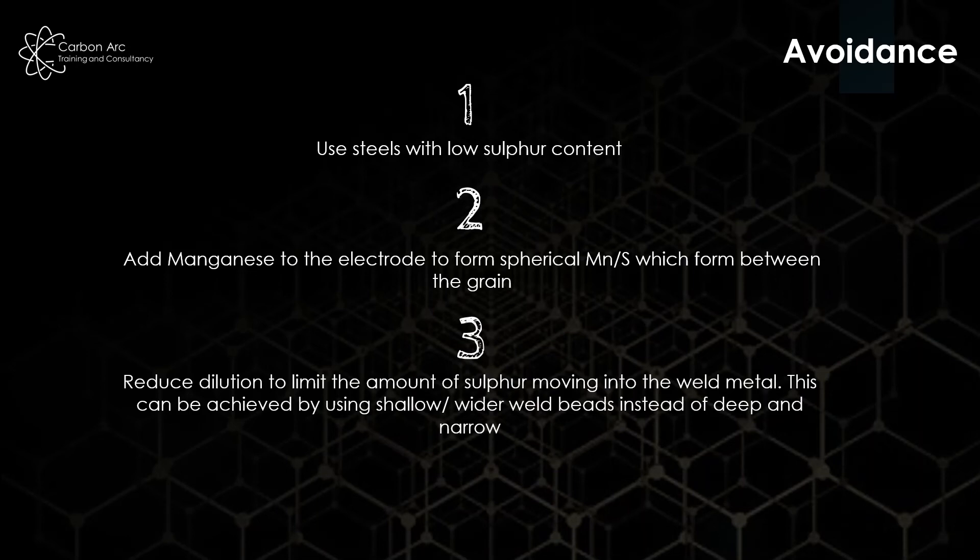If we reduce the dilution in the processes, so make smaller, shallower weld runs, we're naturally going to mix less sulfur into our weld. Again, keeping the amount down so it's less likely to crack.